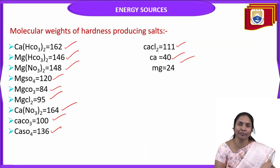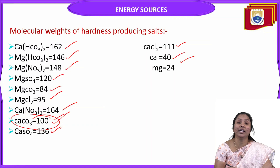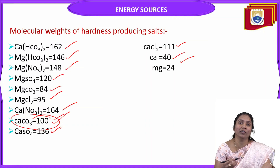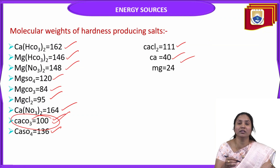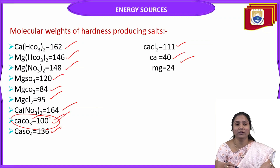All these hardness-causing salts can be converted into CaCO3 equivalent terms because its molecular weight is 100 and equivalent weight is 50, making calculation very easy. First convert all given hardness-causing salts into CaCO3 equivalent terms, then calculate temporary hardness, permanent hardness, and total hardness of water.